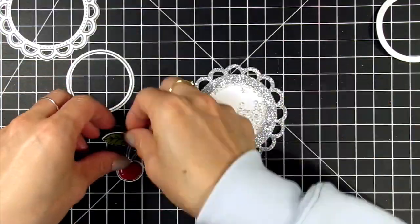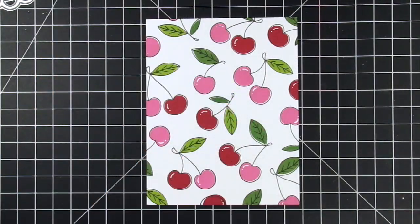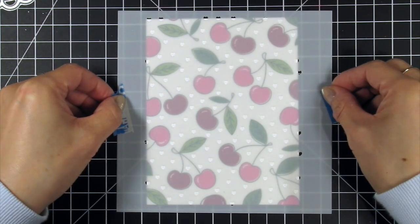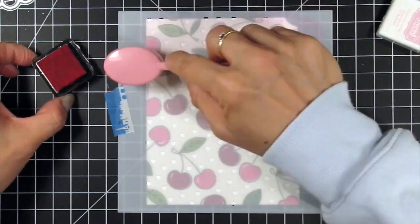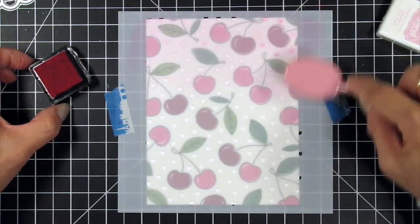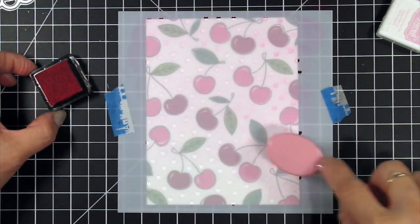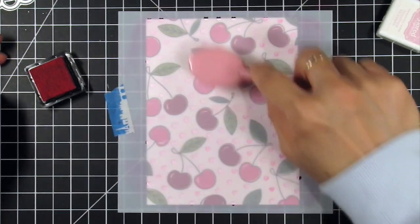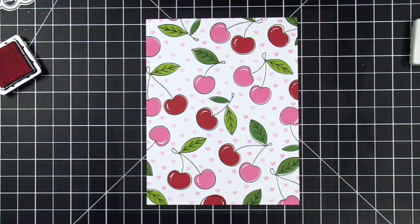I placed a piece of rolled up washi tape underneath the panel to hold it on my grid mat. Then I place the stencil on top and secure it with washi tape. I used a coordinating blender brush with strawberry milkshake ink and lightly blend across the entire stencil. I used slightly more pressure around the edges but in general I tried to keep it even across the entire panel. I just love the reveal when I remove the stencil. How cute are those little pink hearts?